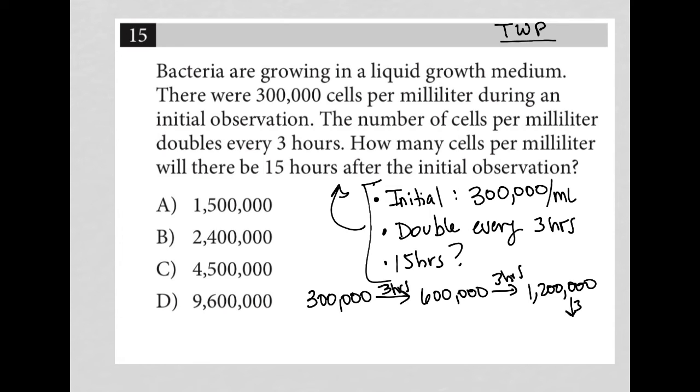After another three hours, we're up to nine hours now. That should be 2.4 million. And after another three hours, we should be at 4.8 million. That's 3, 6, 9, 12. So, just one more double. Another three hours gets me to my total of 15 hours, and that should be 9,600,000.